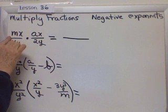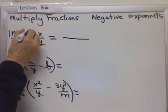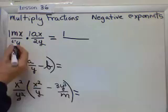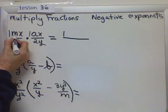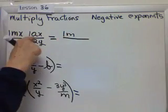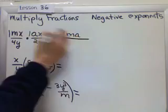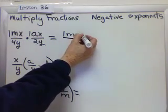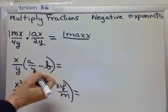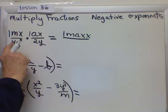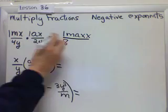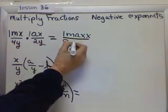So mx times ax, well, the coefficient first. So there's no coefficient, it's understood to be a 1. So first of all, I multiply 1 times 1, and I get 1. I don't need to write the 1, but I'm going to in the beginning. Then m, are there any other m's? Nope. Any other a's? Nope. Uh-oh, there's two x's. I could write x, x, like that. I'm going to simplify this. Alright, but let's do the bottom. Coefficients, 4 times 2, 8. And then there's two y's.